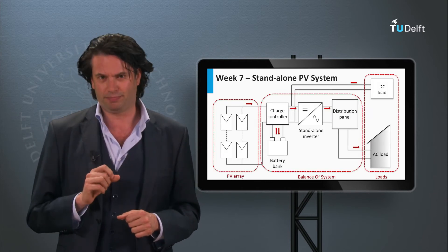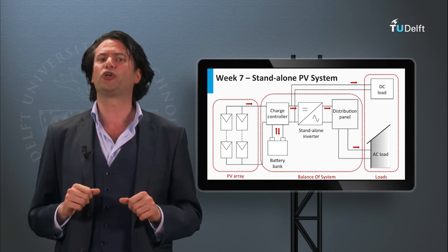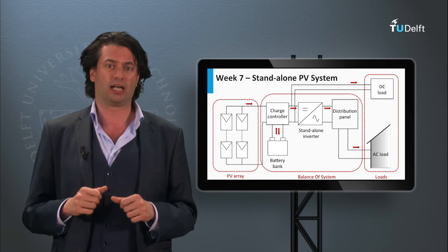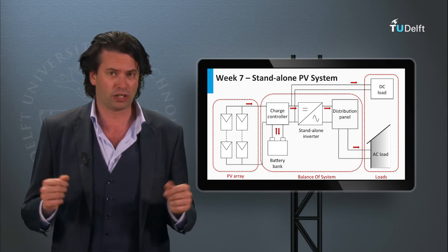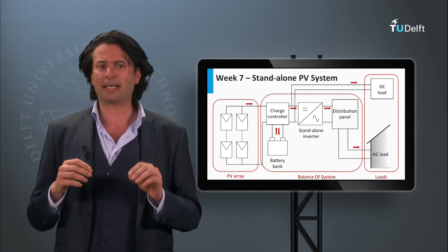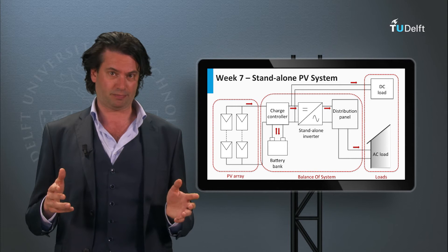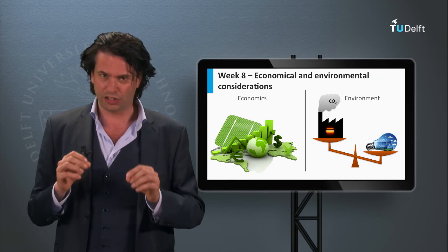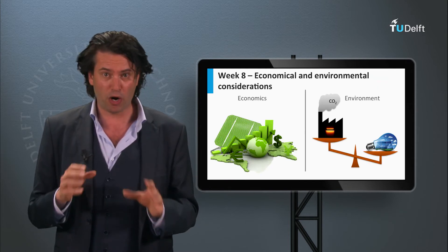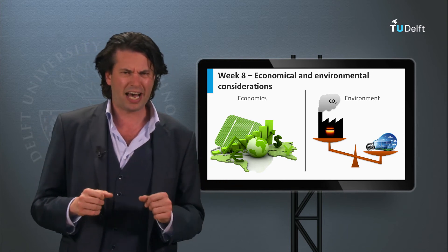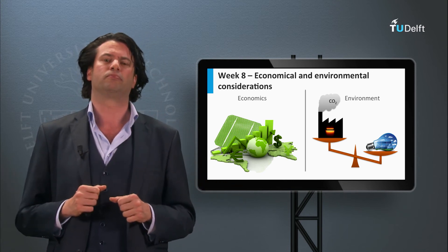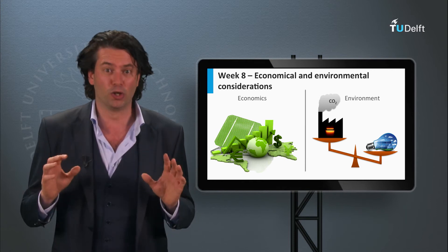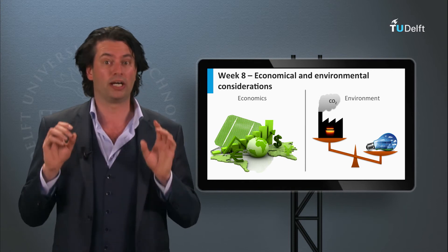In week 7 we looked at the crucial components besides the PV module that make a PV system, like inverters, charge controllers, maximum power point trackers and batteries. In week 8 we have discussed the design rules of both a standalone PV system and a grid-connected PV system, and the economic and environmental aspects have been looked into in more detail.